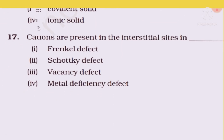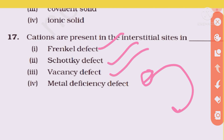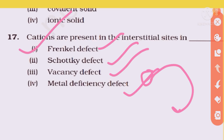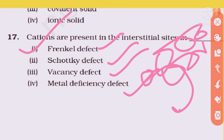Question 17: Cations are present in the interstitial site in which crystal defect? This is about Frenkel defect. In Frenkel defect, the cation leaves its original lattice site and moves into an interstitial site inside the crystal. So Frenkel defect is the answer — not Schottky, not vacancy, not metal deficiency.